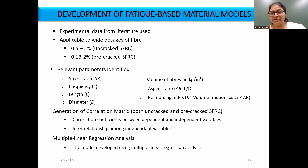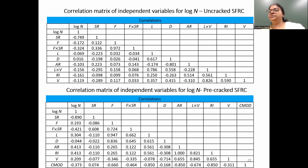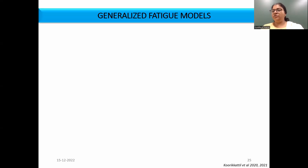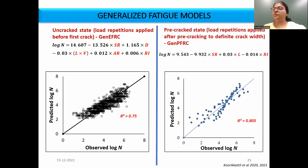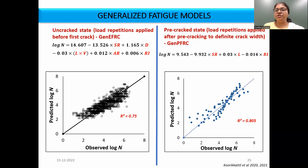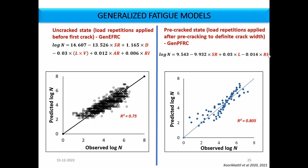A correlation matrix was obtained and based on significant parameters, a multiple linear regression analysis was done. Based on the correlation matrix, progressive multiple linear regression was conducted to obtain the generalized fatigue models. For the uncracked SFRC model, the relevant parameters were stress ratio, diameter, length × volume ratio, volume fraction, aspect ratio, and reinforcing index. For the pre-cracked stage, it is related to stress ratio, length, and reinforcing index.